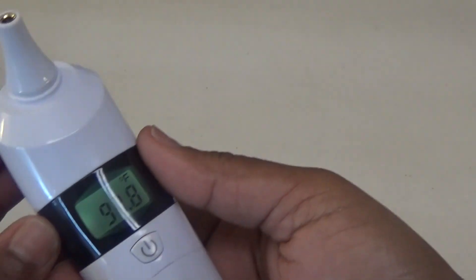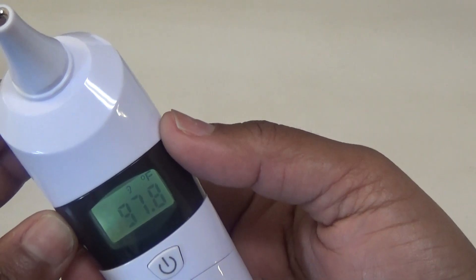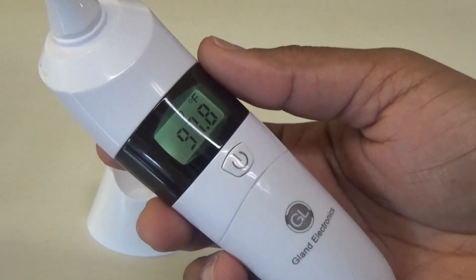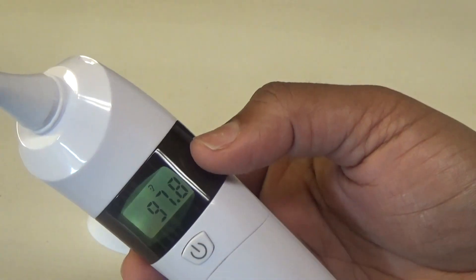And that's how fast you can get the reading. The reading is 97.8 degrees Fahrenheit. I love this. I love the accuracy of an ear thermometer.